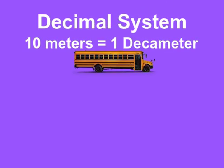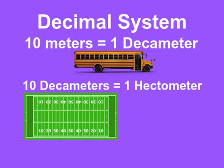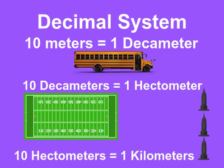You can see how the decimal system makes math a little easier. 10 meters equals 1 decameter. 10 decameters equals 1 hectometer. And 10 hectometers equals 1 whopping kilometer.